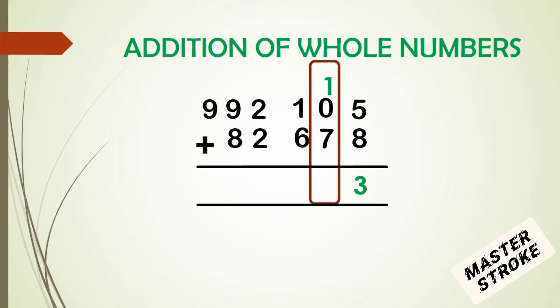Now, in the tens place, we have 1 plus 0 plus 7, which gives us 8. We write 8 in the tens place. There is nothing to be carried forward, therefore we leave it at 8.